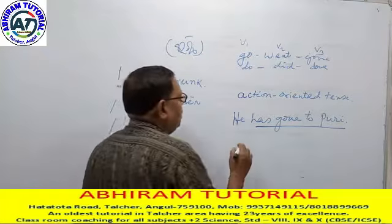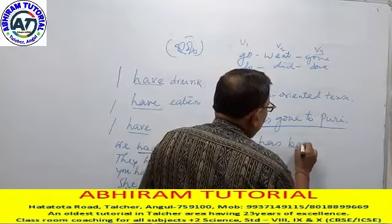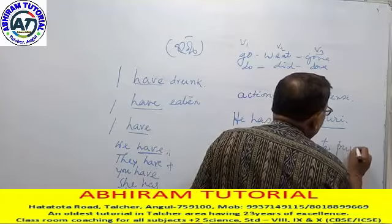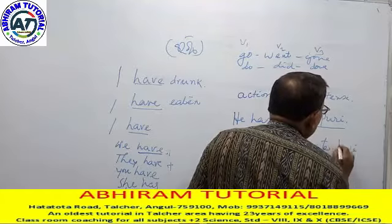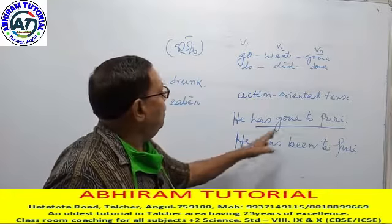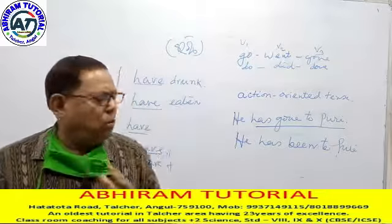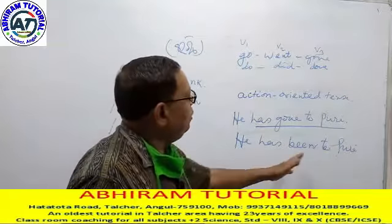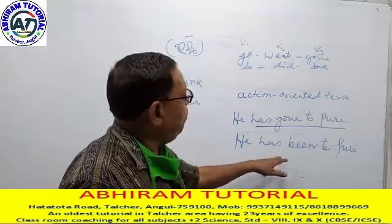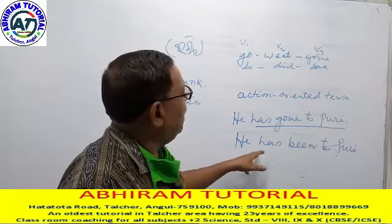This sentence 'he has gone to Puri' means that person is not here — he has already gone to Puri, meaning he is at Puri now. But if I say 'he has been to Puri,' that means that person has already returned from Puri — he is not there now. So 'he has been to Puri' means he has returned.